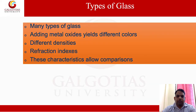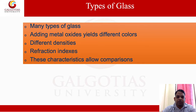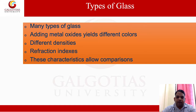Types of glass. There are several types of glass according to their composition, such as soda lime glass, fired glass, porous liquid glass, tempered glass, bulletproof glass, etc. Adding metal oxides gives different colors, like chromic oxide, sulfur oxide, zinc oxide, etc. Different densities depend on their composition. Refractive index is also one of the most important parameters for analysis of glass. These characteristics allow comparison of different types of glass and help identify their origin.